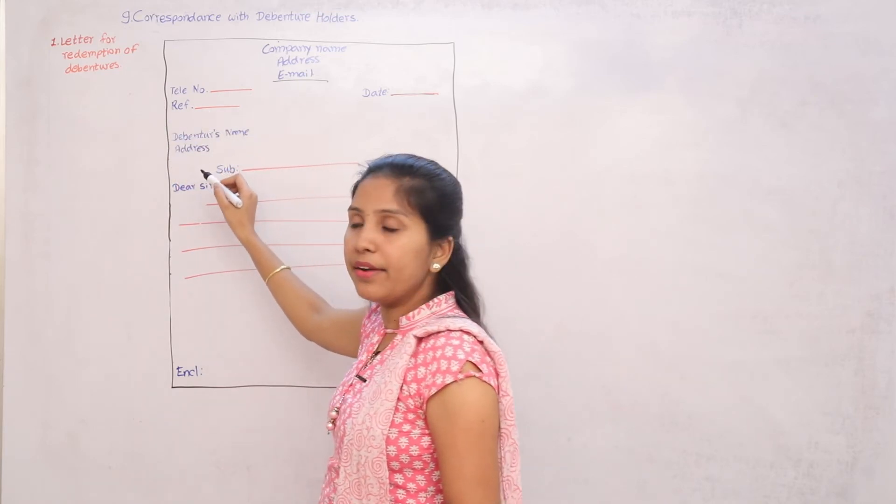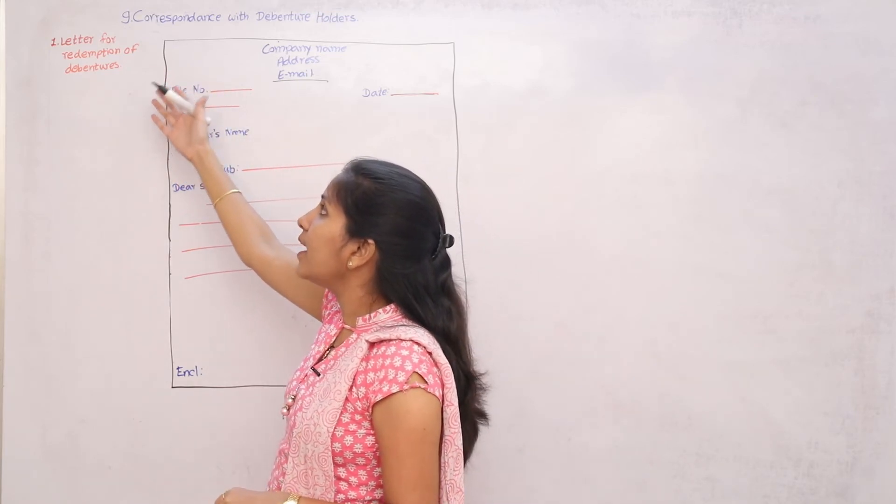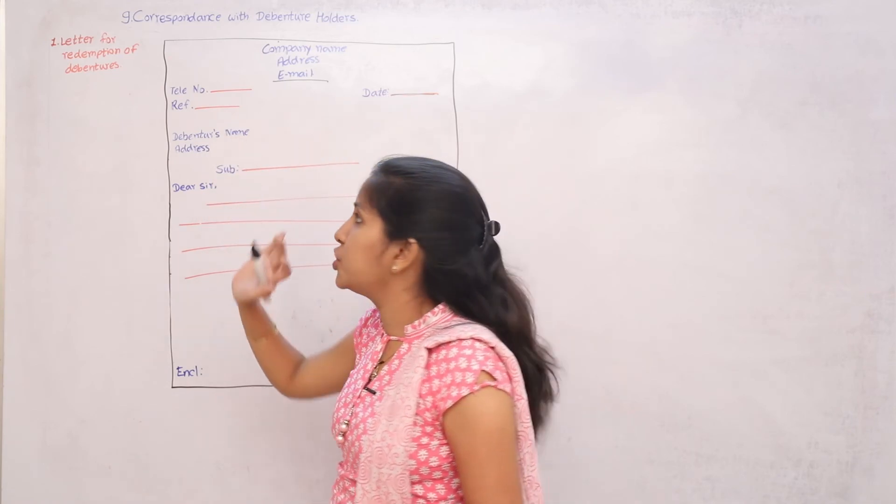Then the debenture holder name, address, subject. What in the subject? Letter for redemption of debentures.